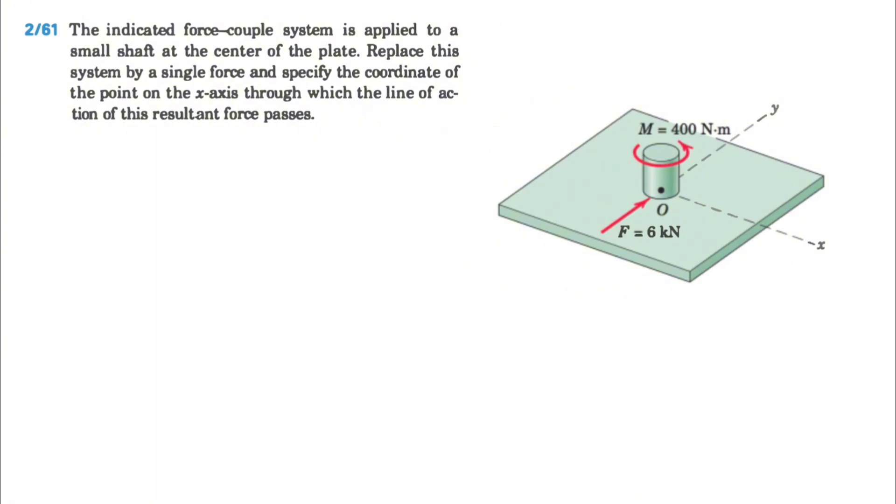Basically we have a force in here and a moment, so that's the force-couple system that we have, and we have to replace this with one single force that the line of action of that force passes through the x-axis. So if we call this distance x, you have to figure out this distance.